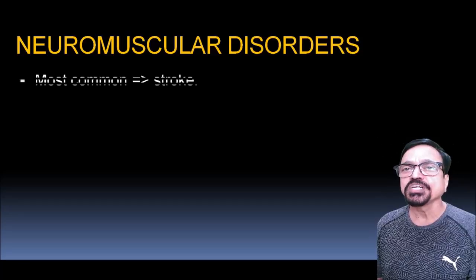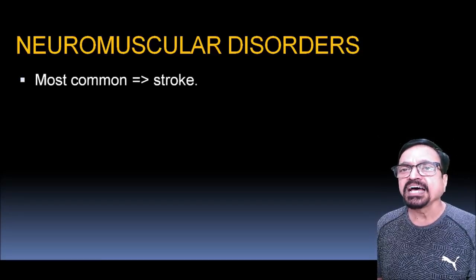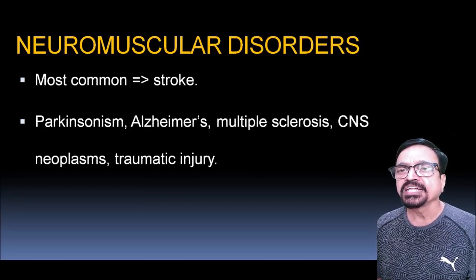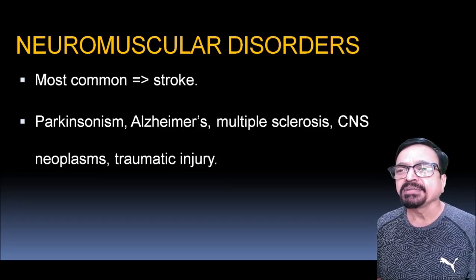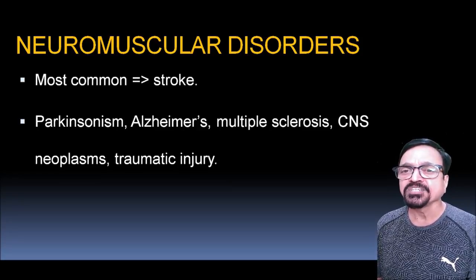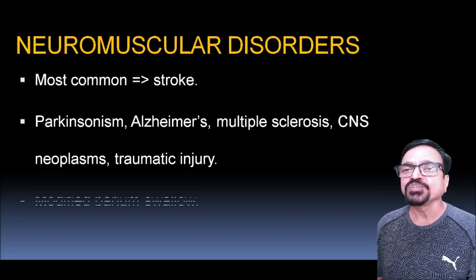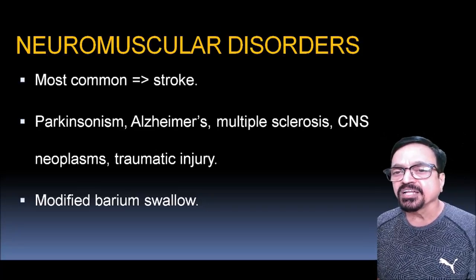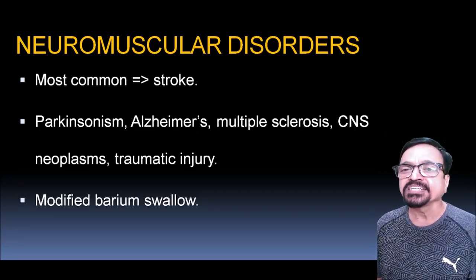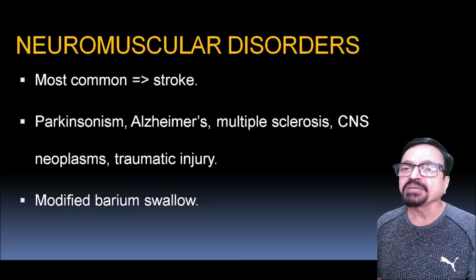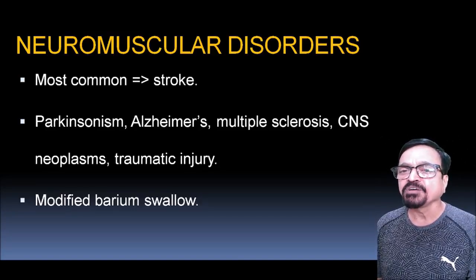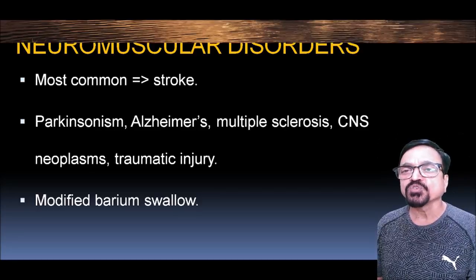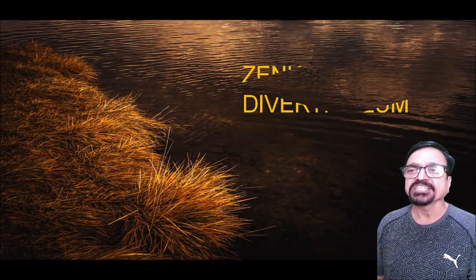Neuromuscular disorders are most commonly seen following strokes. Parkinsonism, Alzheimer's disease, multiple sclerosis, CNS neoplasms, and traumatic injuries are other causes. A modified barium swallow study is required for all these conditions. Fluoroscopy and cine radiography play a major role in detailed accurate evaluation.